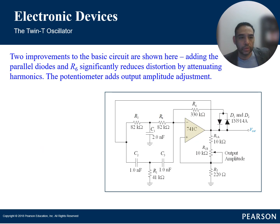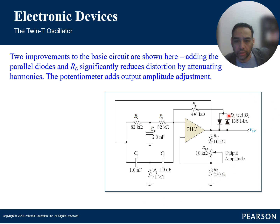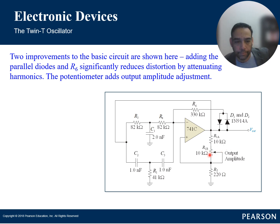Improvements to the basic circuit include adding parallel diodes and R6 on the feedback path, which significantly reduces distortion by attenuating harmonics. A potentiometer can also be added for output amplitude adjustment. However, for audio signals that are very fast, you'd want some kind of automatic gain control rather than manual adjustment with a potentiometer.